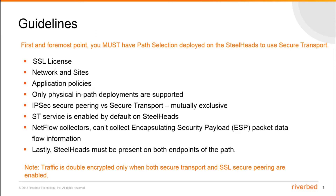Guidelines when you configure secure transport. First and foremost, you must have path selection deployed on the steelheads to use secure transport. Secure transport requires an SSL license. You must configure networks and sites before you begin configuring secure transport. When you define networks, you specify which networks are secure. You must configure application policies before you begin configuring secure transport. Only physical in-path deployments are supported.